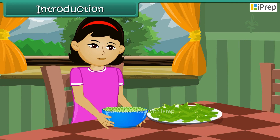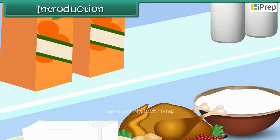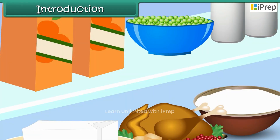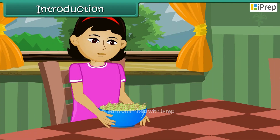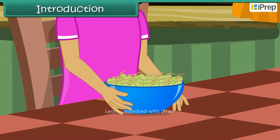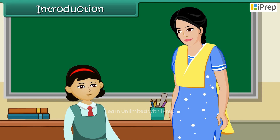After shelling the peas, Neha had stored them in the refrigerator. After some days, she saw that the peas had sprouted. She carried some to her science teacher and asked for the reason. Her teacher explained the reason to the entire class. This is what she explained.